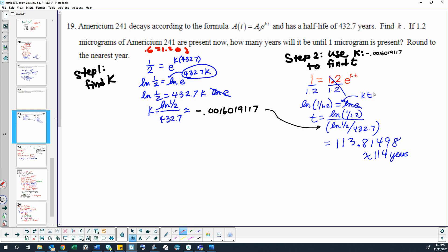Do the natural log of both sides. Again, our power comes to the front. The natural log of e is 1. So we really just have kt here. So then to solve for t, we take our natural log 1 divided by 1.2, and we divide that by k, which we could use either this original answer or we could use the decimal answer. And then putting that all in the calculator correctly gives us a decimal answer of 113.81498, which rounded to the nearest year is approximately 114 years for that amount to decay.